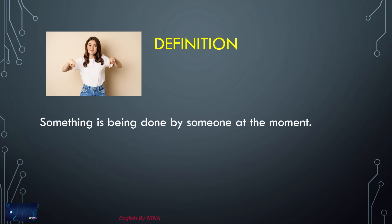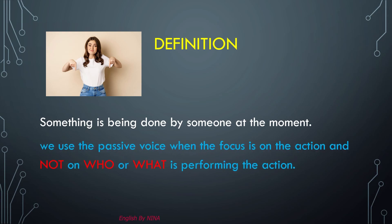Present continuous passive means something is being done by someone at the moment. We use a passive voice when the focus is on the action, and not on who or what is performing the action.